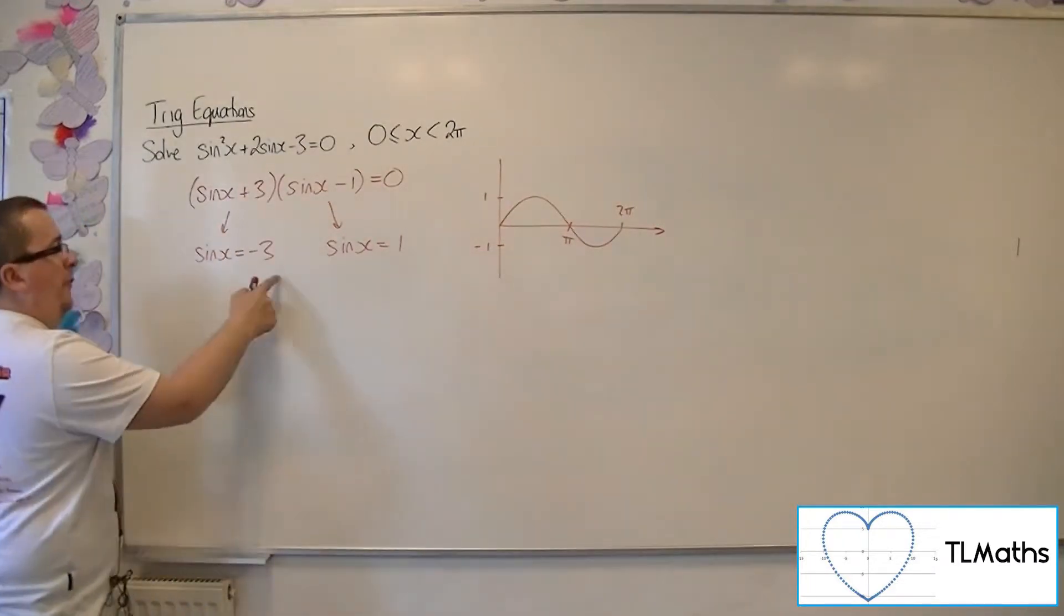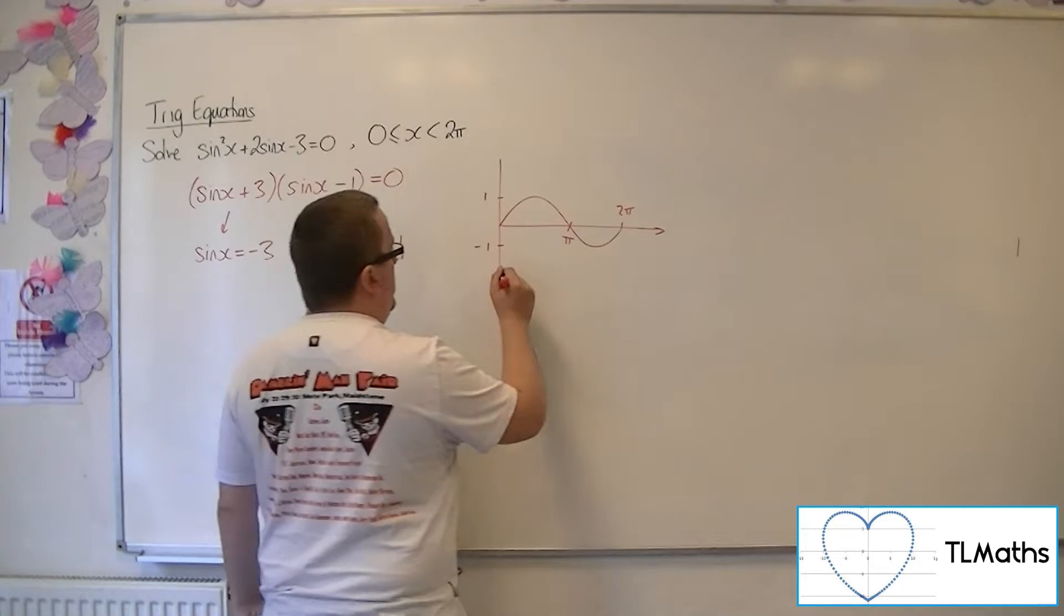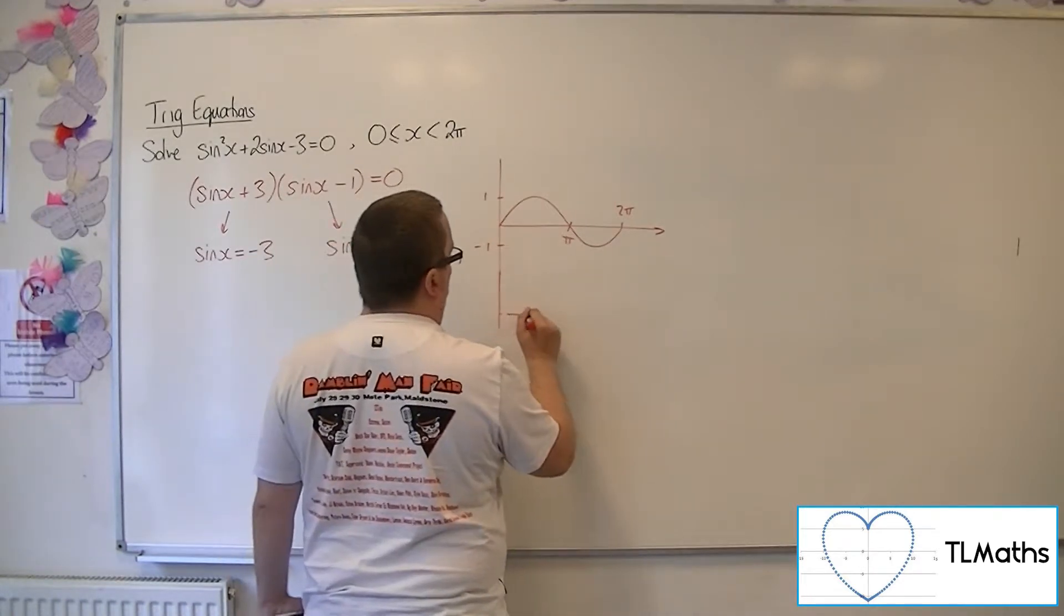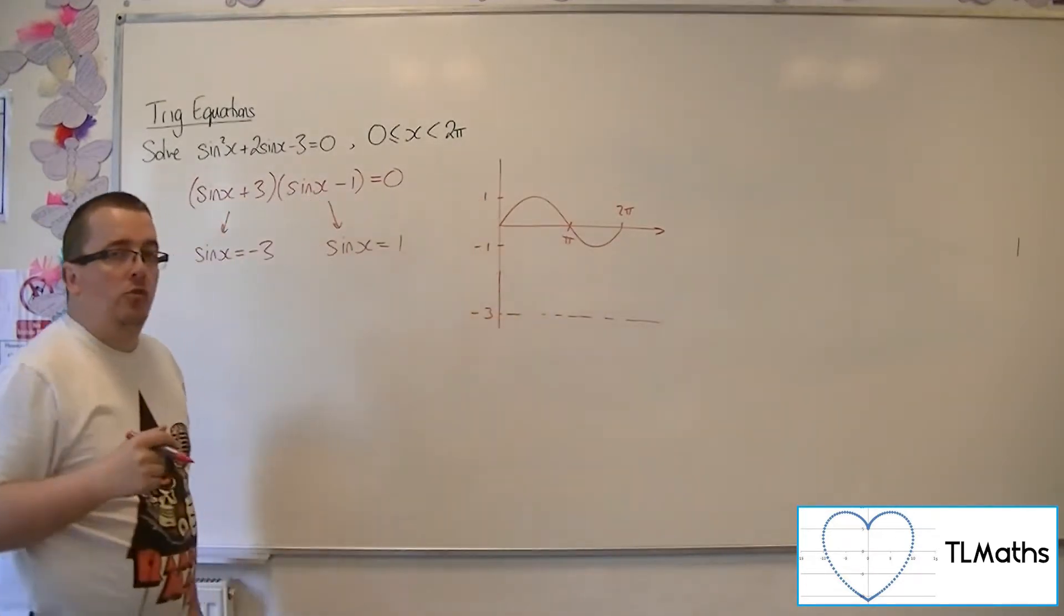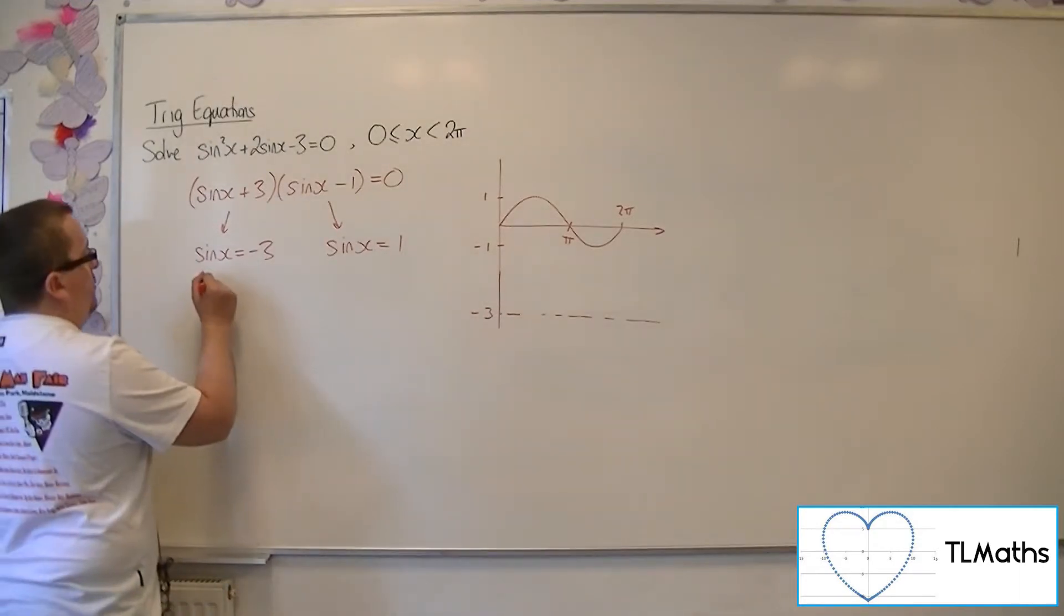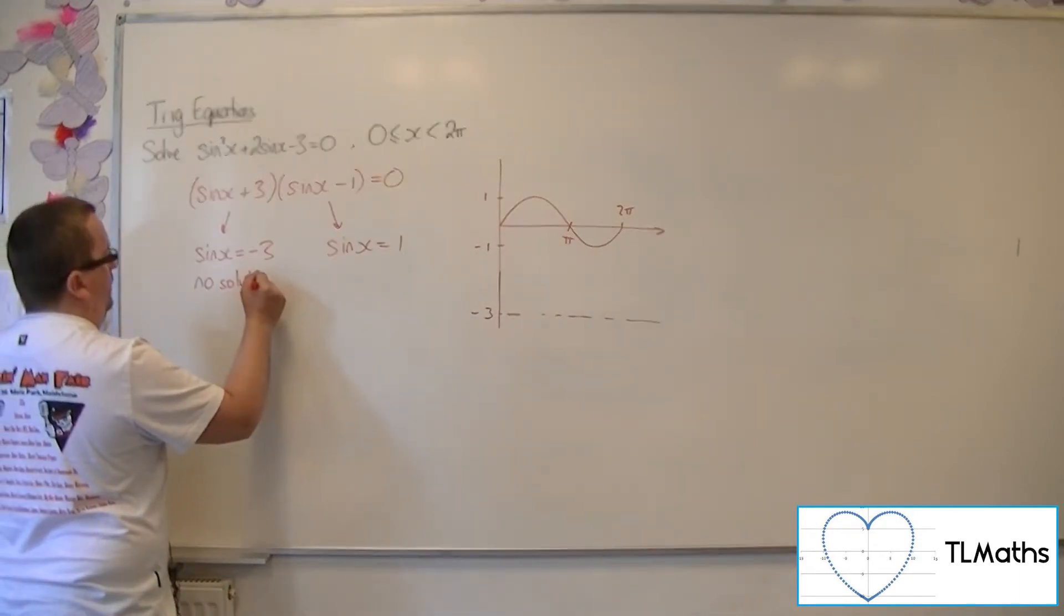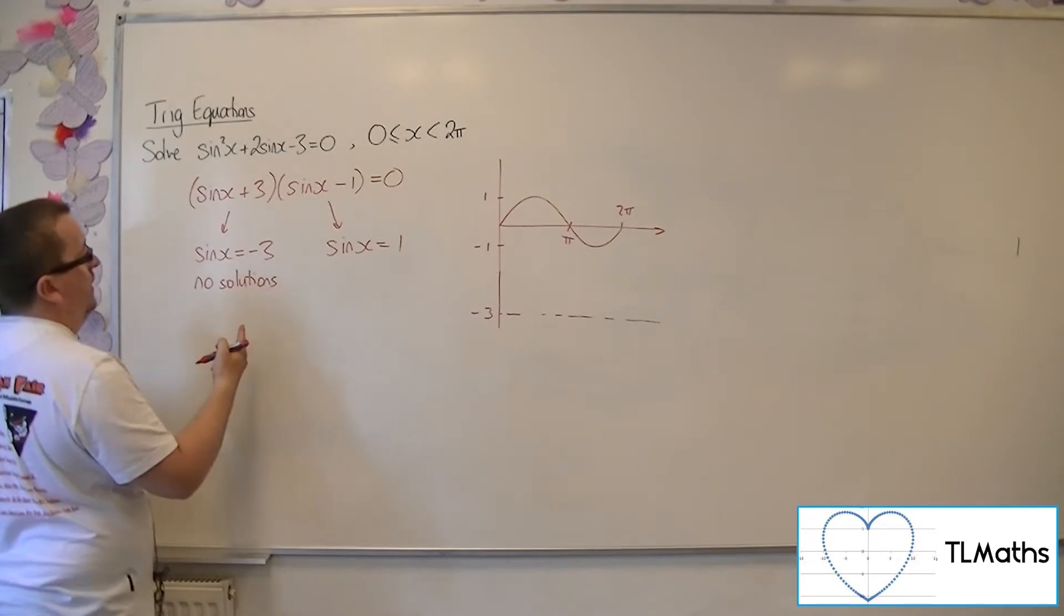So when solving sinx = -3, minus 3 is all the way down here and won't cross the sine curve at all. So there are no solutions to this equation.